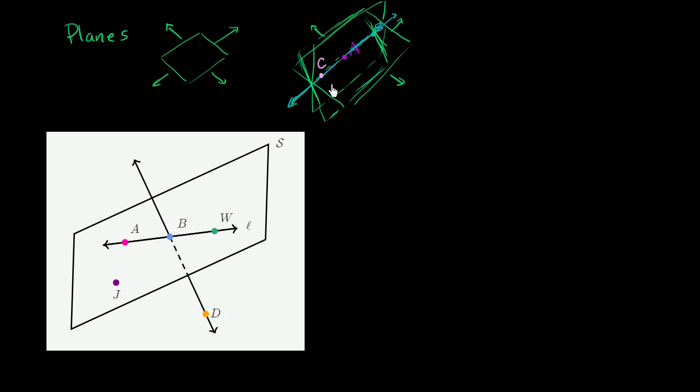But what if we make the constraint that the three points are not all on the same line? Obviously, two points will always define a line. But what if the three points are not collinear? So instead of picking C as a point, what if we pick a point D that is not on this line, that is on more than one of these planes?